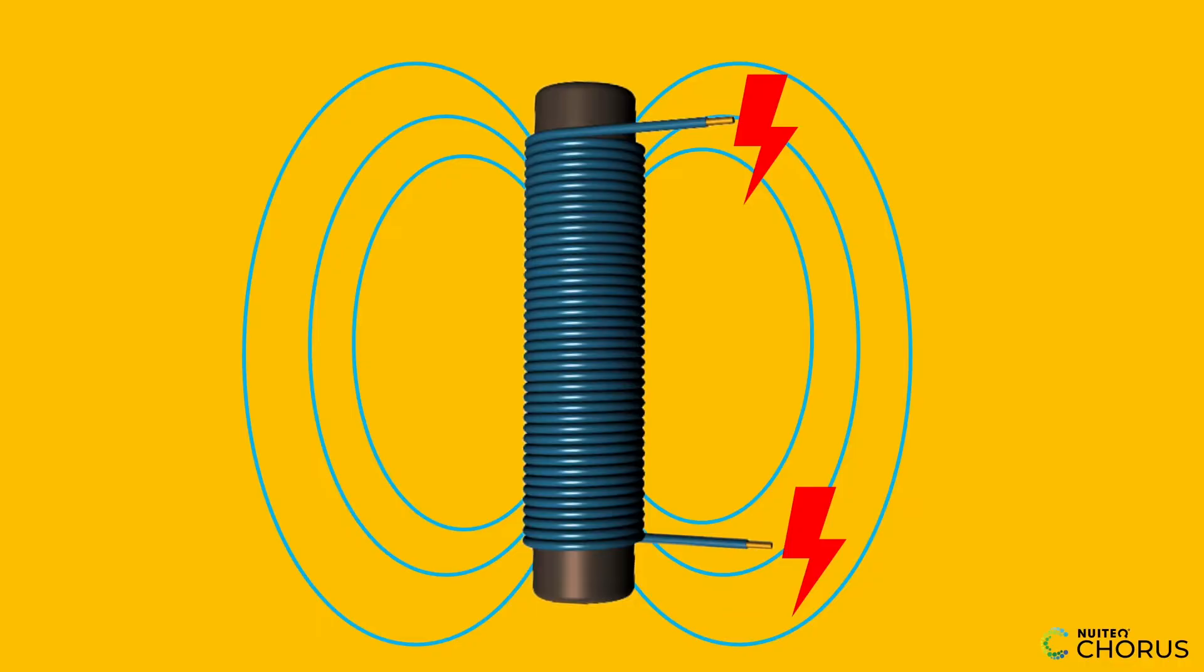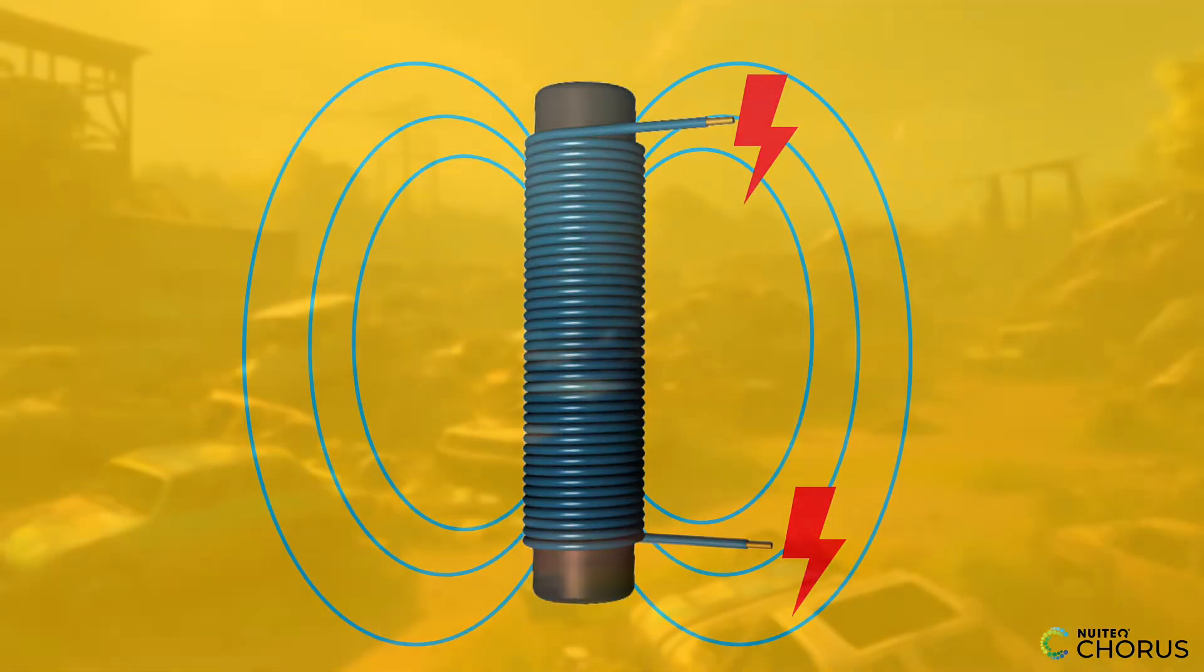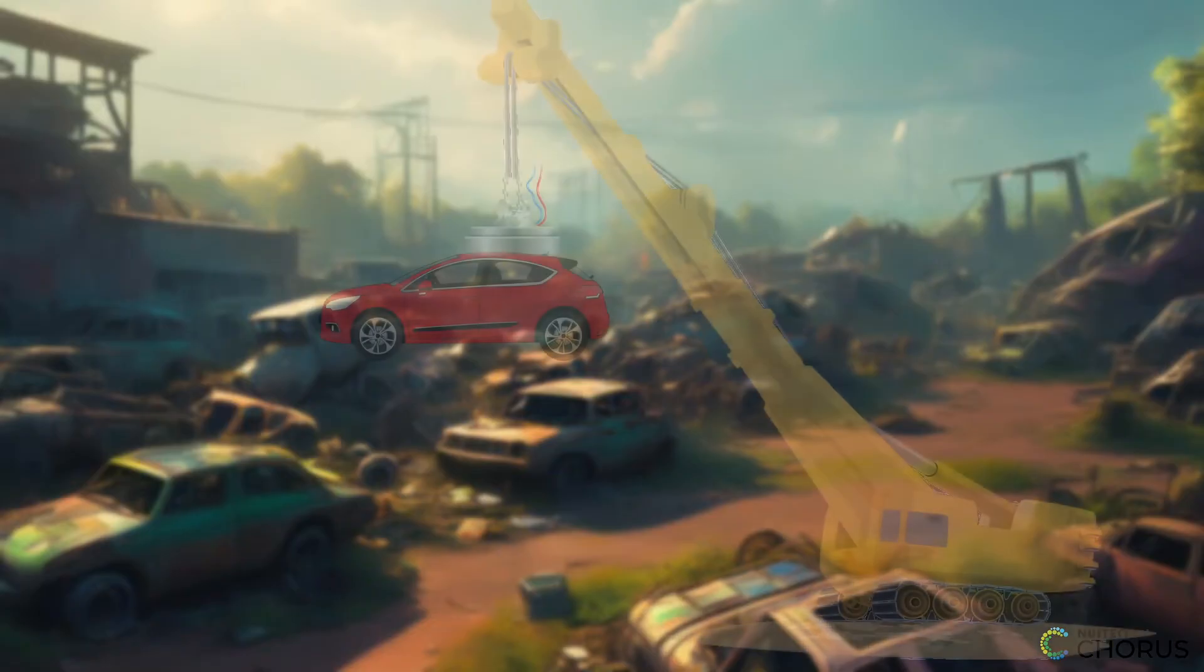So, where do we find electromagnets in action? Let's check out some everyday examples. First up, junkyard cranes.